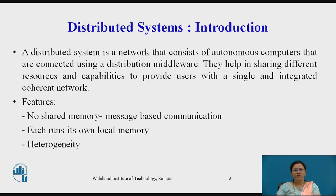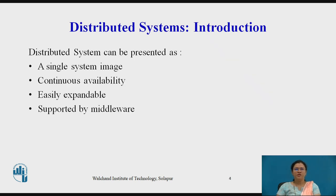First, we will see the introduction. A distributed system is a network that consists of autonomous computers that are connected using a distribution middleware. They help in sharing different resources and capabilities to provide users with a single and integrated coherent network. Features include no shared memory — message-based communication is used. Each node runs its own local memory, and it is heterogeneous in nature. A distributed system can be presented as a single system image view, having continuous availability, being easily expandable, and supported by the middleware architecture.